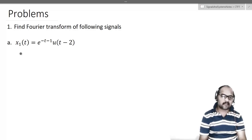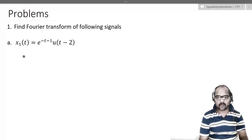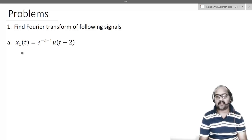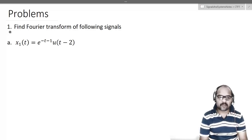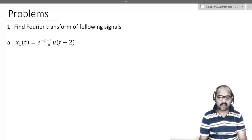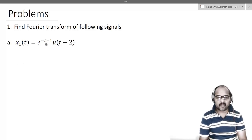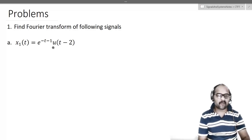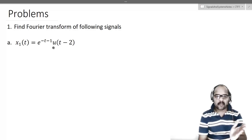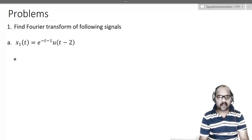Before we go to the next chapter which is Laplace transform, let us solve as many problems as possible in continuous time Fourier transform. The first question: find the Fourier transform of the given signal. Looking at this signal, you can easily see it looks like e^(-at) u(t) but shifted by 2 units. So we can write x1(t) as e^(-3) multiplied with e^(-(t-2)) u(t-2).